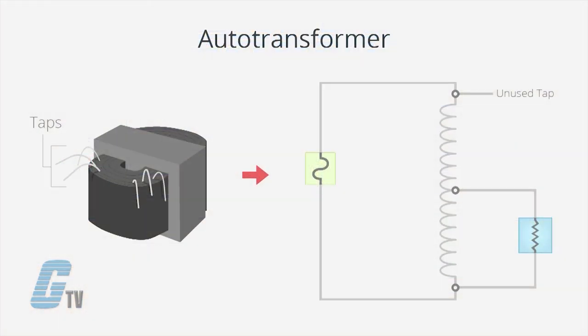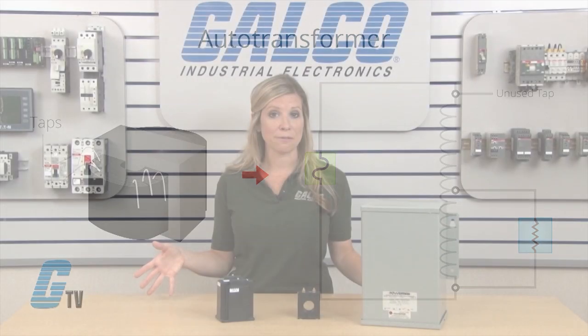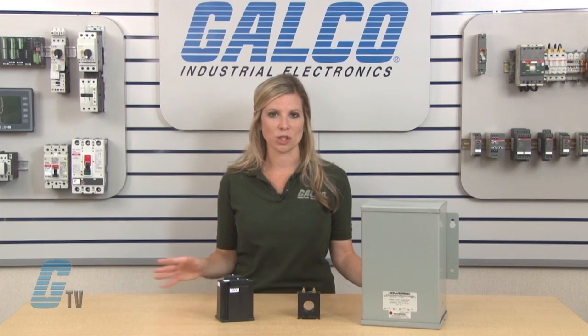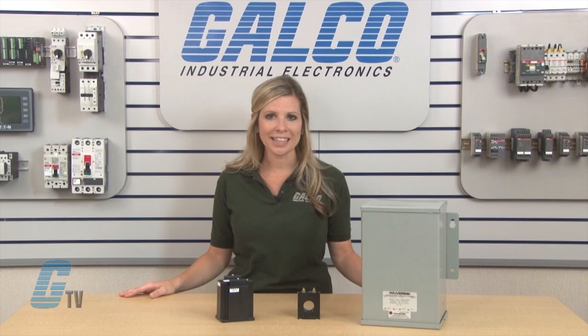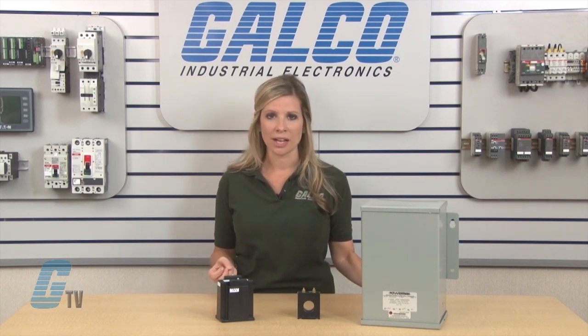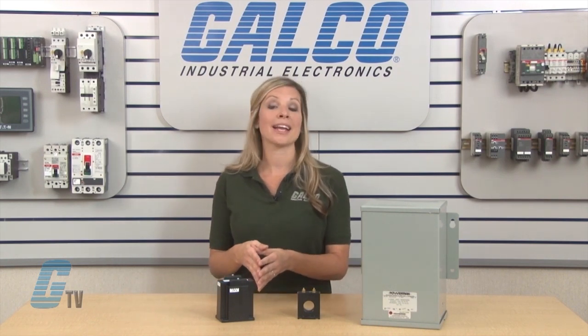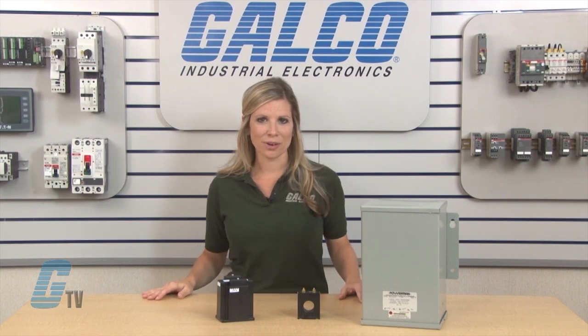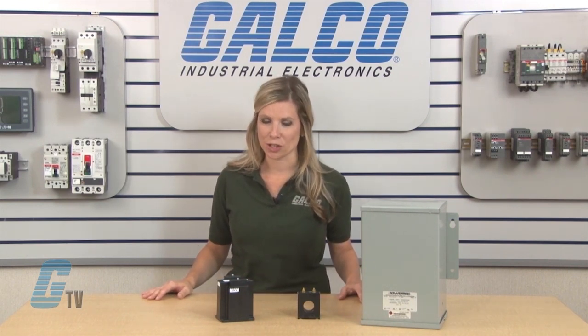The auto transformer is a special type of power transformer. It consists of a single, continuous winding that is tapped on one side to provide either a step-up or a step-down function. This is different from a conventional two-winding transformer, which has the primary and secondary completely insulated from each other but magnetically linked by a common core. The auto transformer's windings are both electrically and magnetically interconnected.